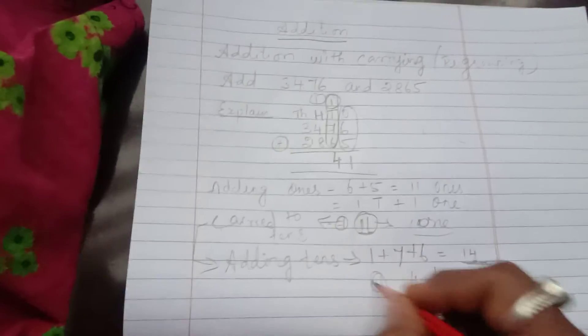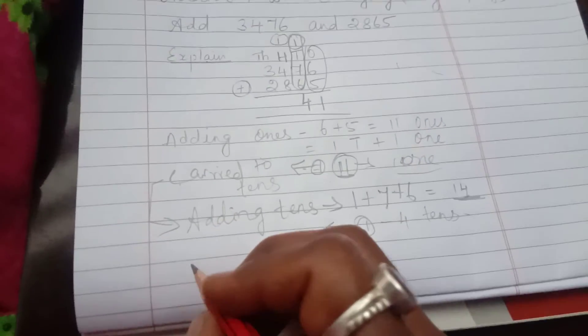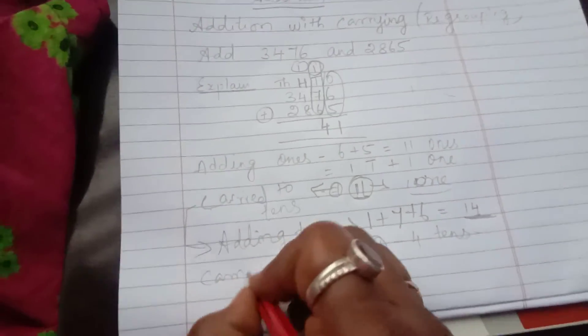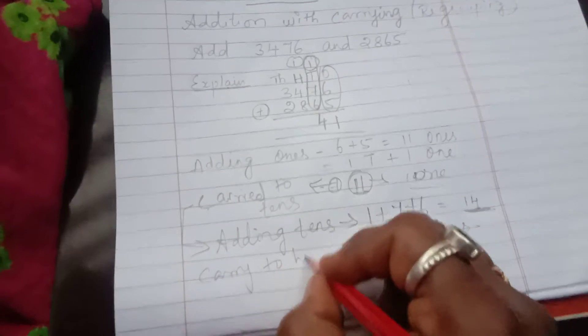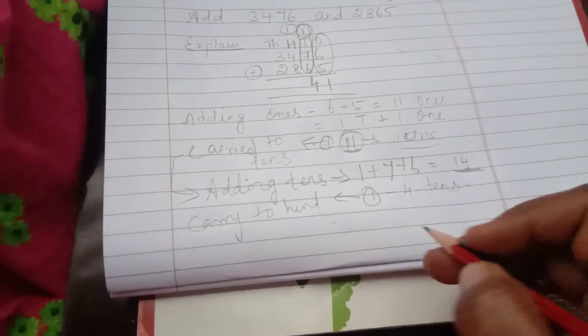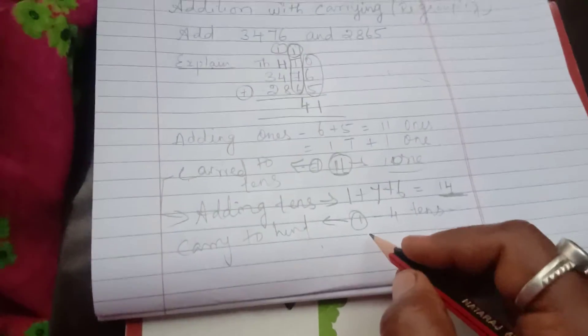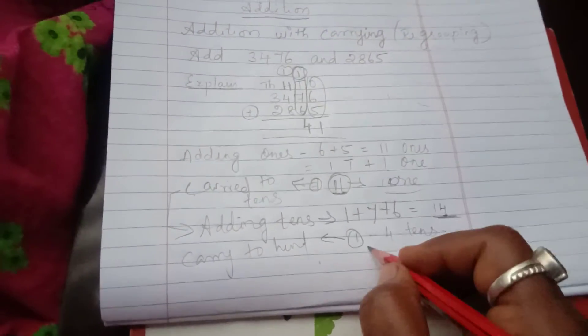4 in tens place and 1 is carried to hundreds. Carried to hundreds place. So 4 in tens and 1 in.